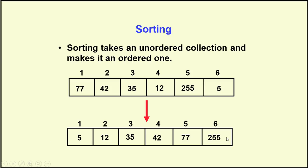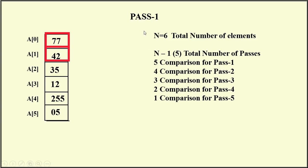If we want to arrange numbers in ascending or descending order, we have different sorting algorithms: bubble sort, selection sort, insertion sort, merge sort. As per this problem, we are going to consider bubble sort. Considering an array A of A[0] to A[5], we have 6 elements, n equal to 6. As per bubble sort, we require n minus 1 passes.